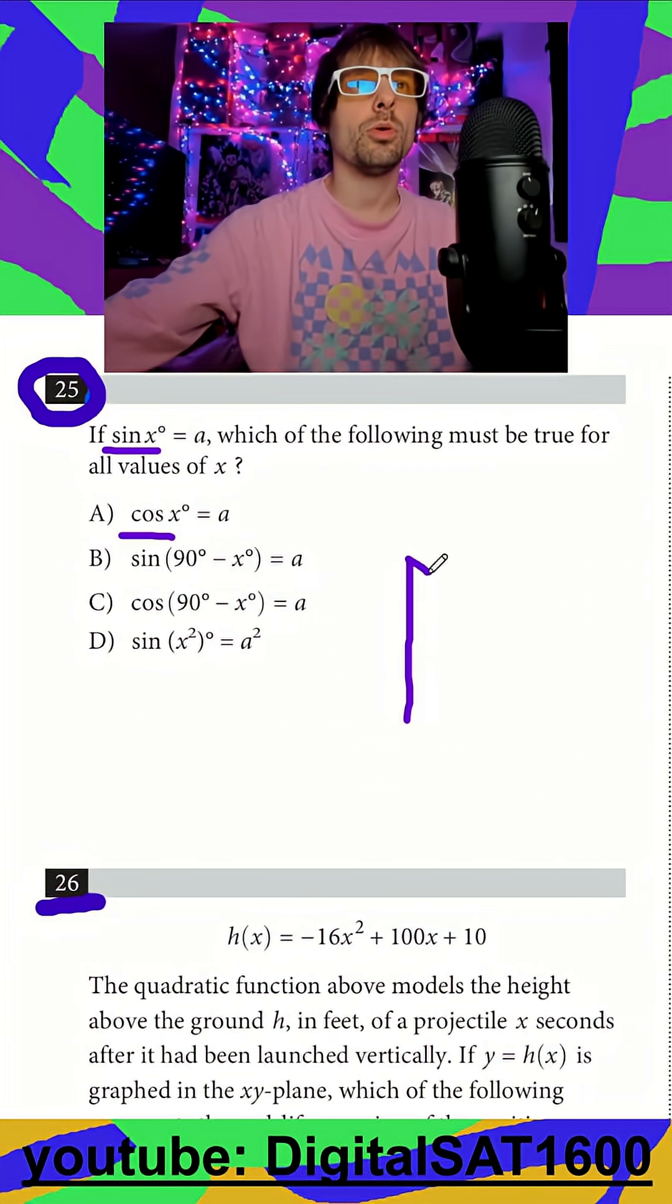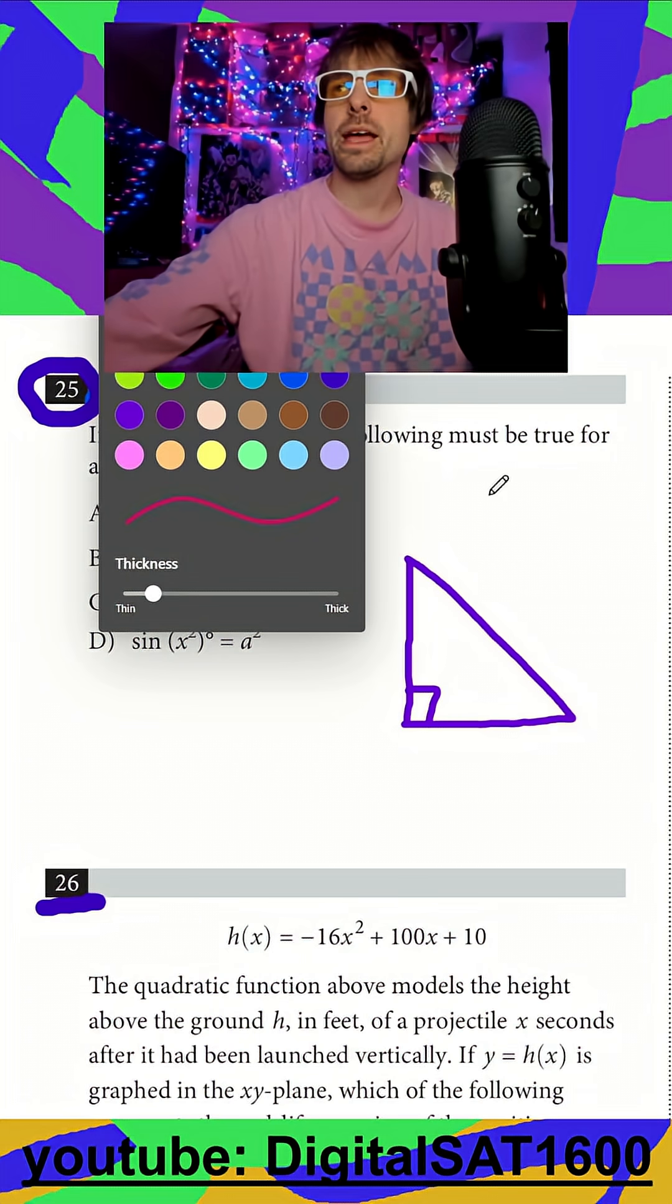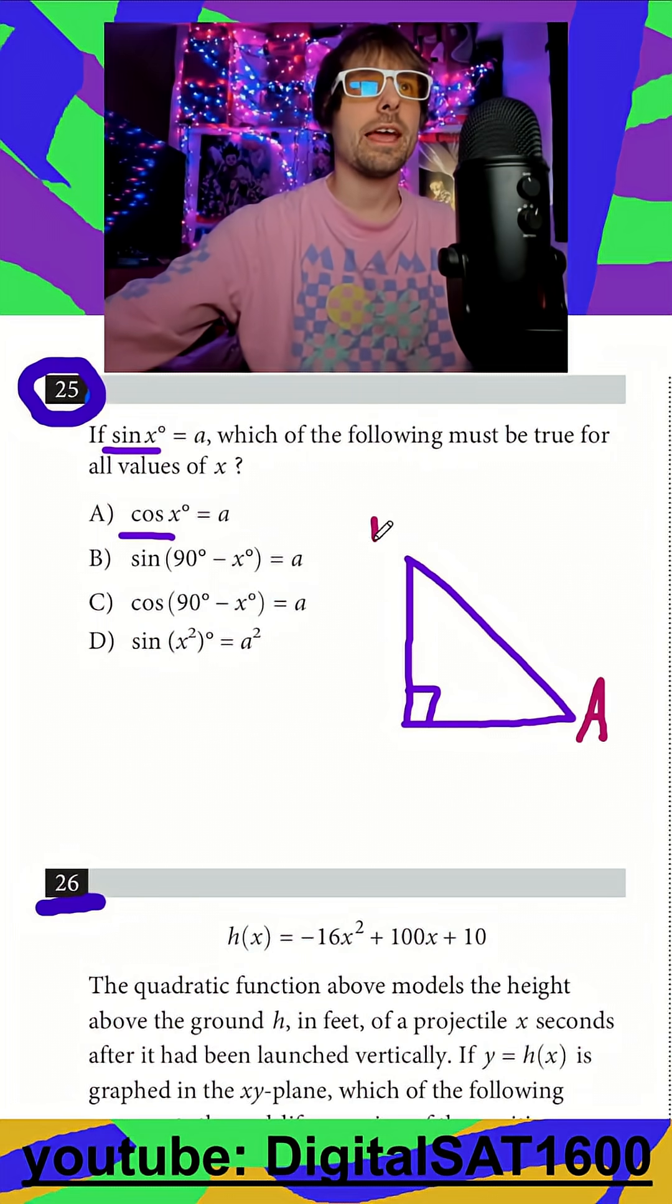So we'll try to draw a pretty simple right triangle here. We'll give this two main angles we want to focus on. Let's call this A and B.